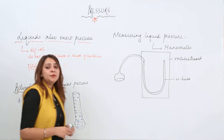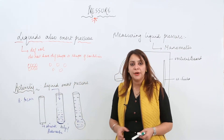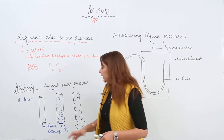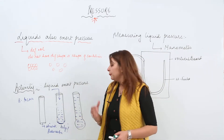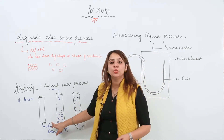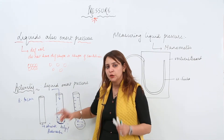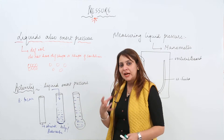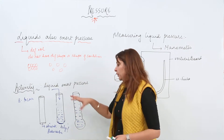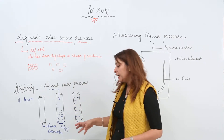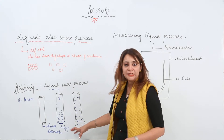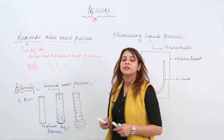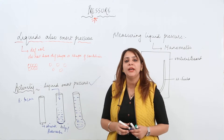The reason behind this bulging is simply liquid pressure. If the liquid didn't exert pressure, it wouldn't have bulged out. When there is no liquid, there is no bulging — it remains as a plain stretched membrane. But when we pour liquid, it starts bulging, and when we increase the volume of liquid, the bulging is seen as more. So by this activity you can actually prove that liquid exerts pressure.